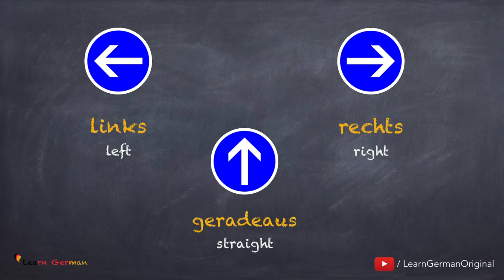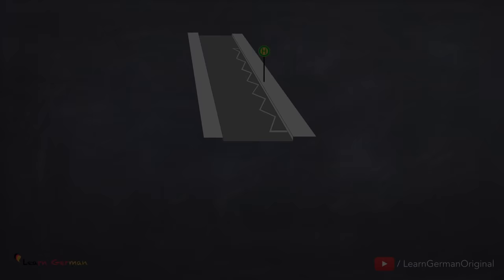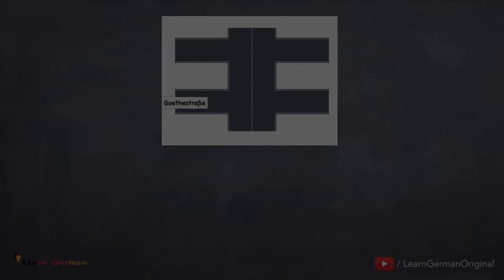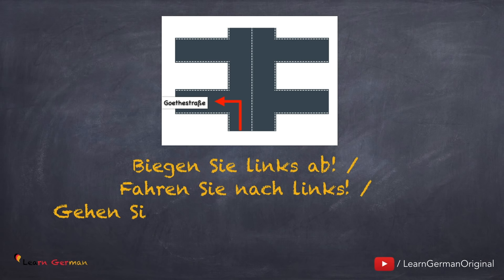Now we'll be doing some structures where you can use these words. Here's the first one: 'Gehen Sie geradeaus.' If someone asks you for directions, this is how you answer. In this video we'll be doing many such structures — we would advise you to learn them.